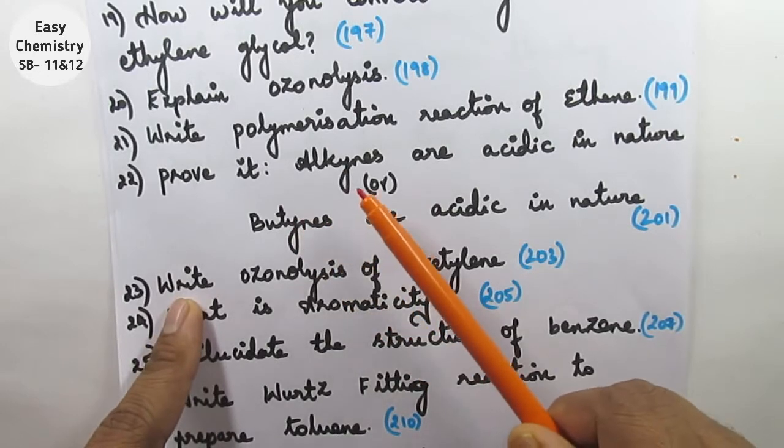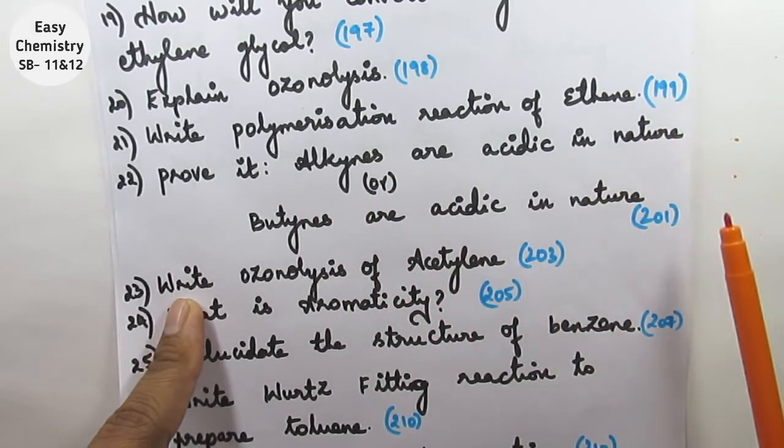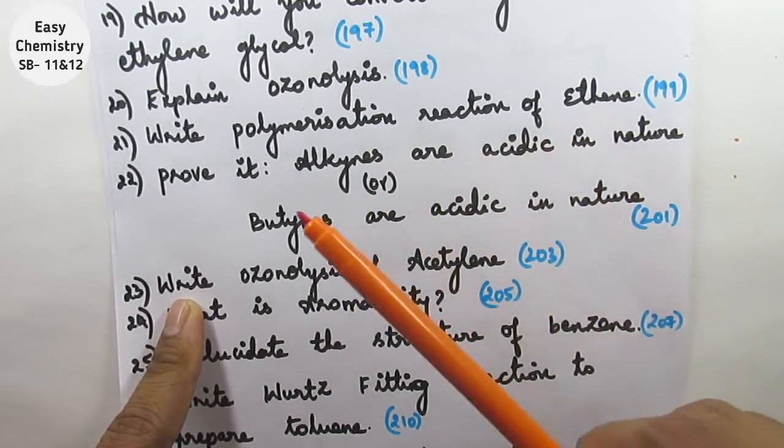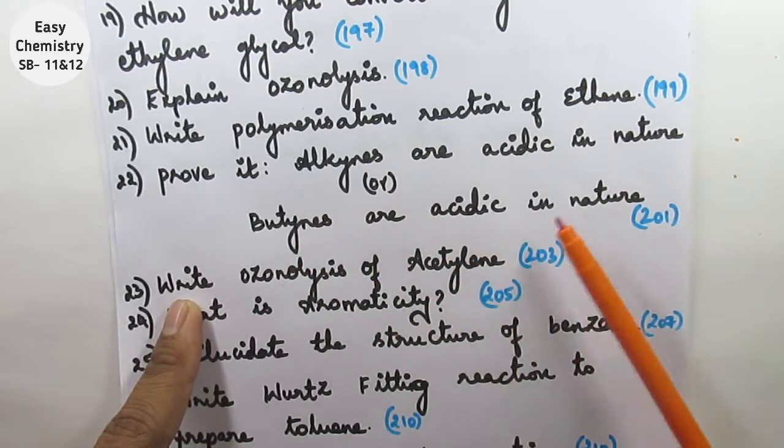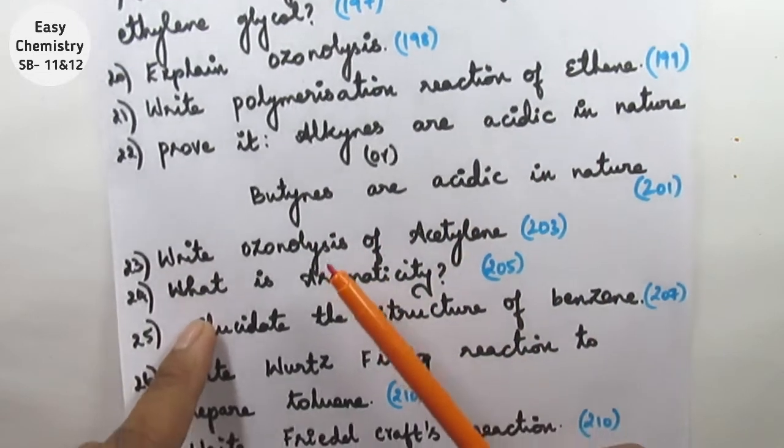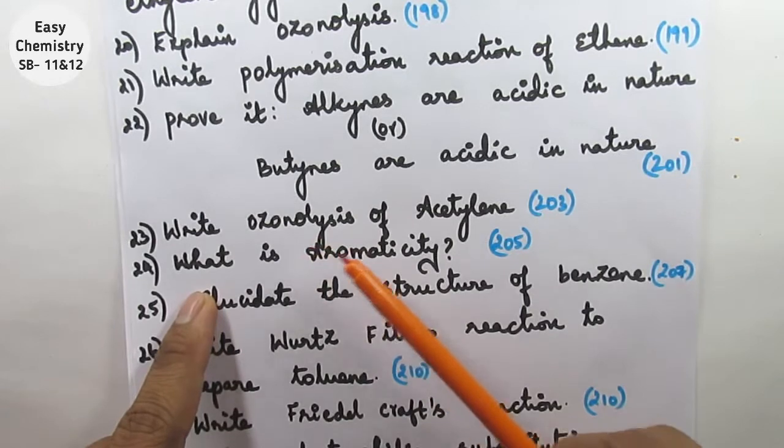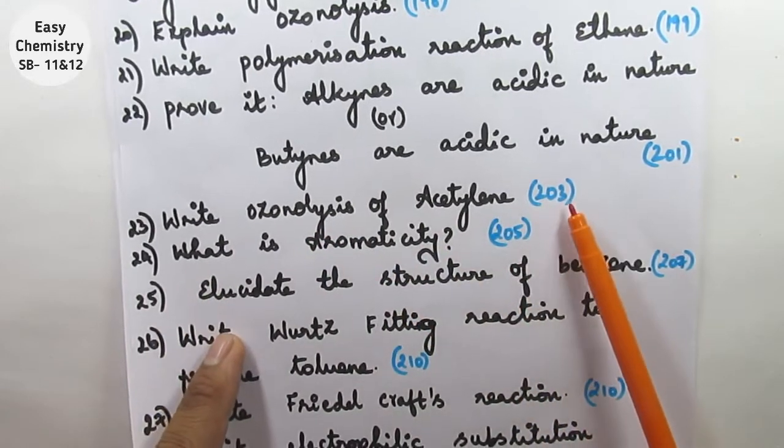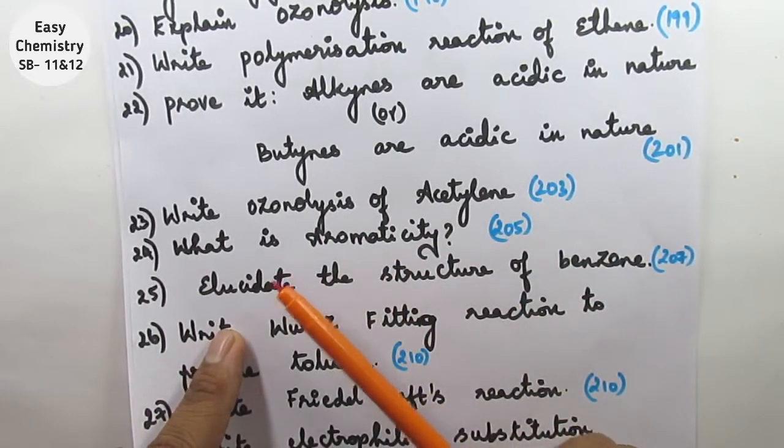Question number 22: Prove that alkynes are acidic in nature. It is a general question. Prove that alkynes are acidic in nature. Question number 23: Write ozonolysis of acetylene, page number 203. Question number 24: What is aromaticity?